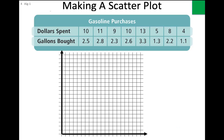Sometimes you have an independent and a dependent variable. For instance, the amount of gallons you buy depends upon how much money you spend — so dollars is your x. Similarly, how long you leave a turkey in the oven depends upon how much it weighs, so weight would be your x.